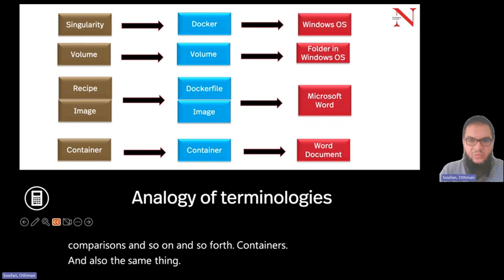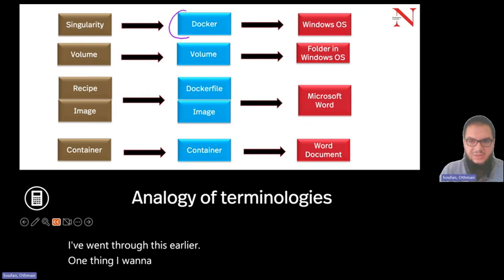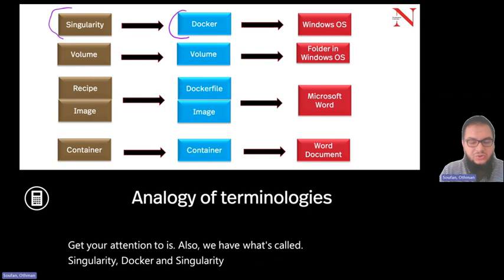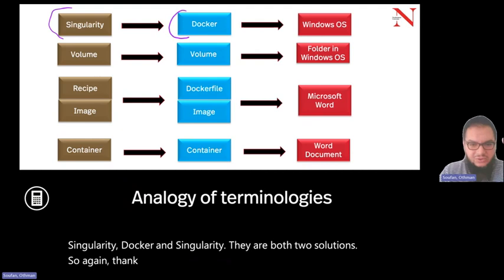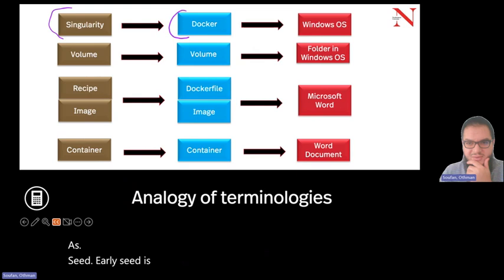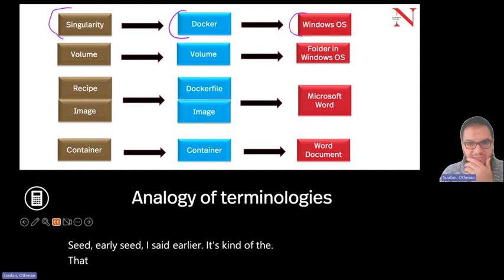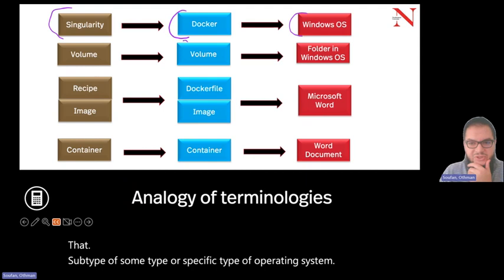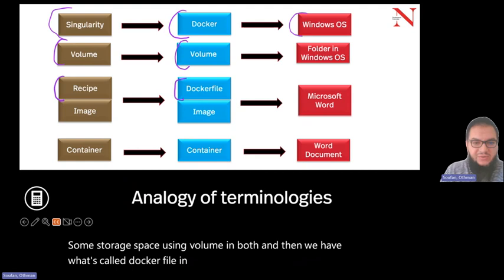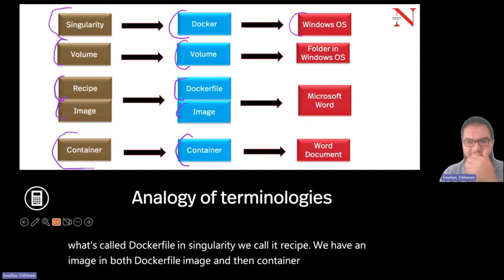One thing I want to get your attention to is that we have what's called Docker and Singularity — they are both two solutions. Think about it as Microsoft and Macintosh. Docker is a specific type of operating system. We can establish some storage space using volumes in both, and then we have what's called a Dockerfile. In Singularity, we call it a recipe. We have an image in both, and the container is our realization of what we end up running.